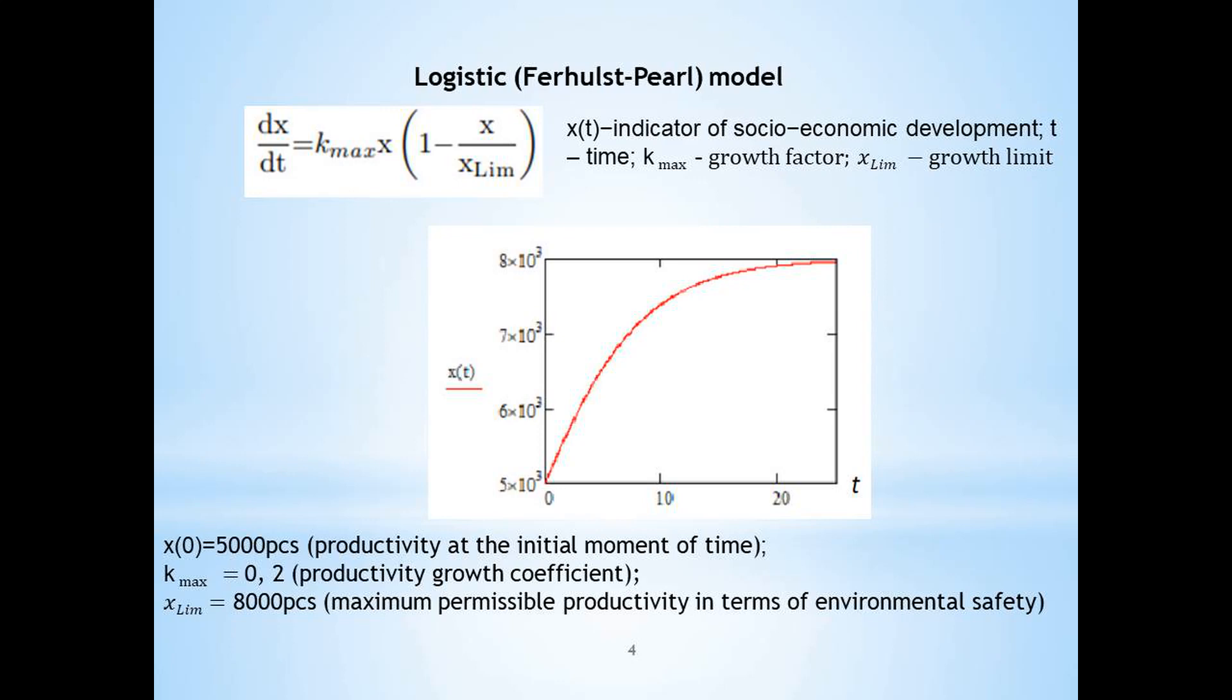The essence of the presented equation is that changes in the system depend on factors that contribute to its development and factors that inhibit or limit this development. This means that within the system there is a certain regulatory mechanism that ensures the process of sustainable development at the level of self-organization. This approach to modeling rational economic behavior is consistent with the theory of Gawson, according to which rationality is determined by the desire to increase satisfaction or reduce dissatisfaction.